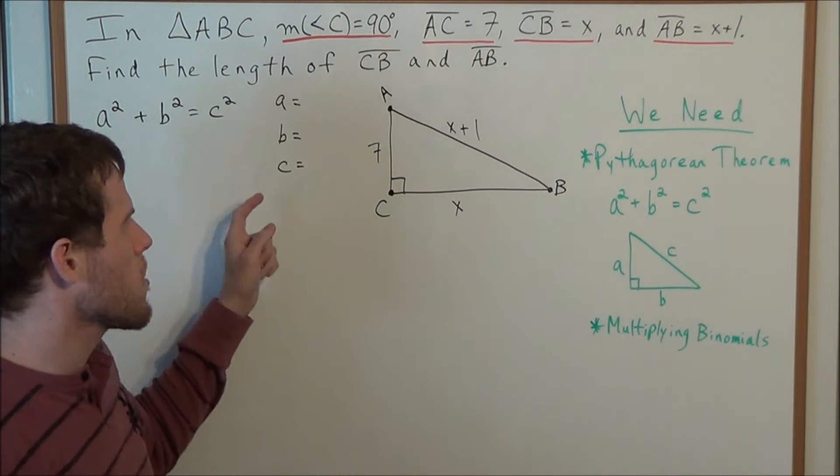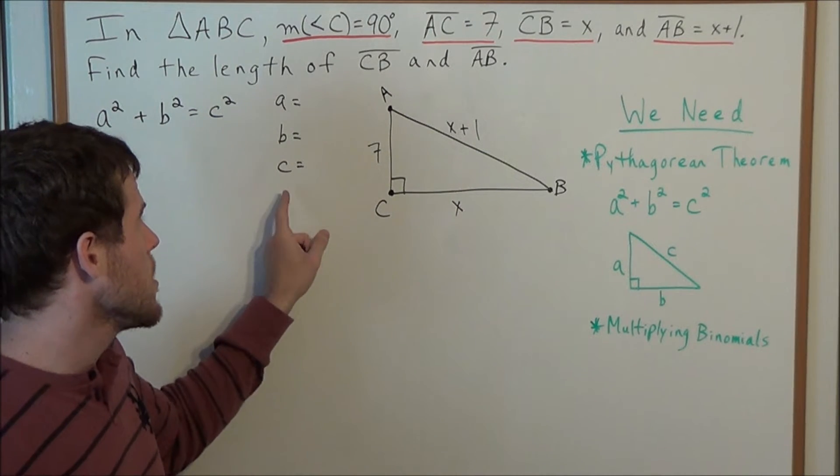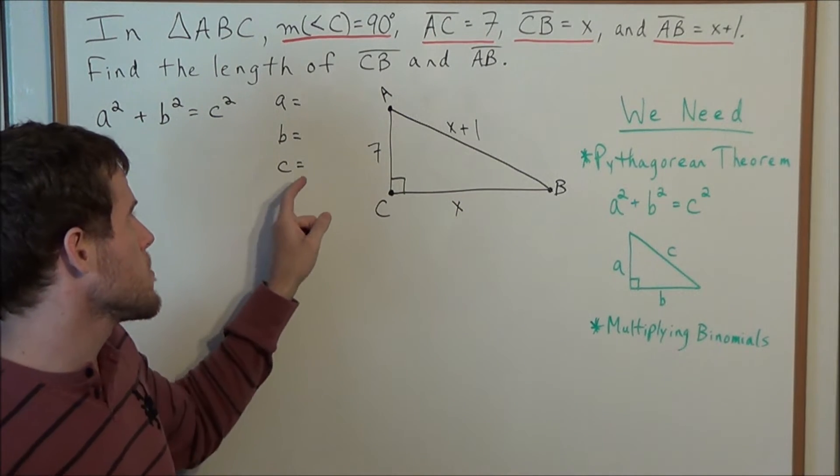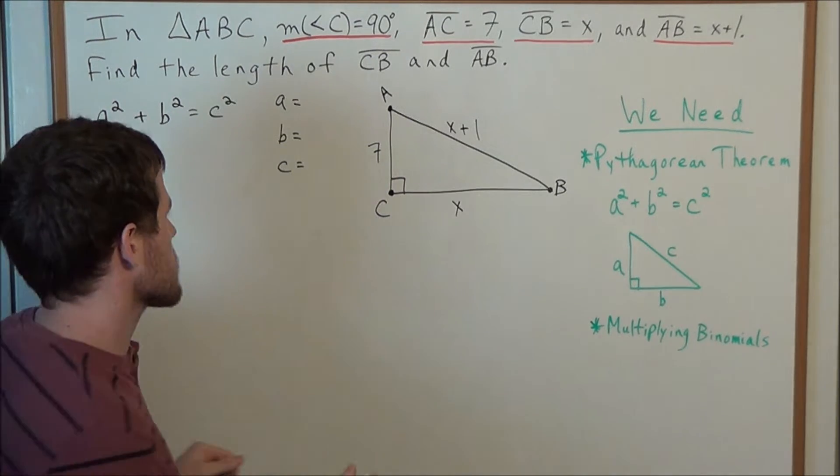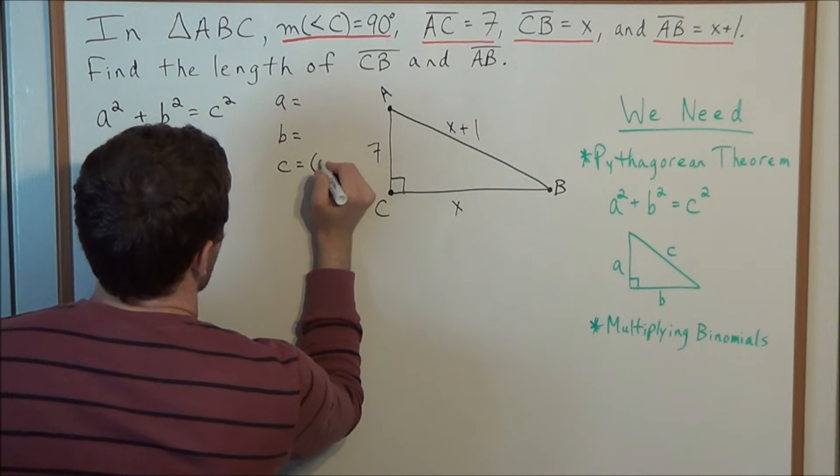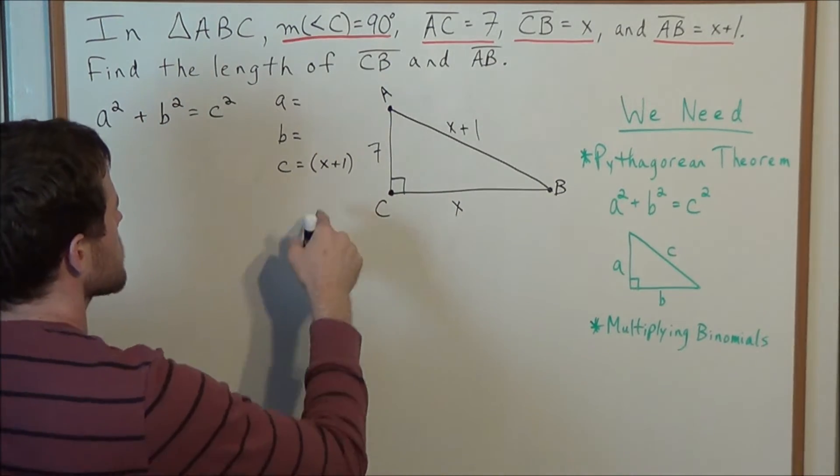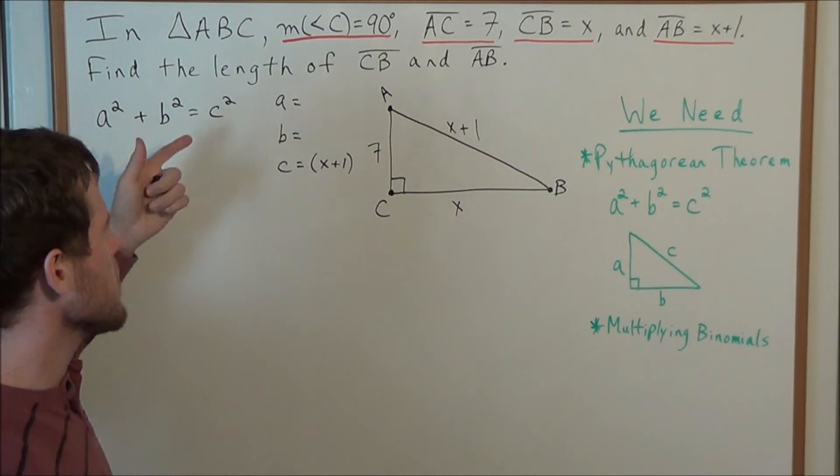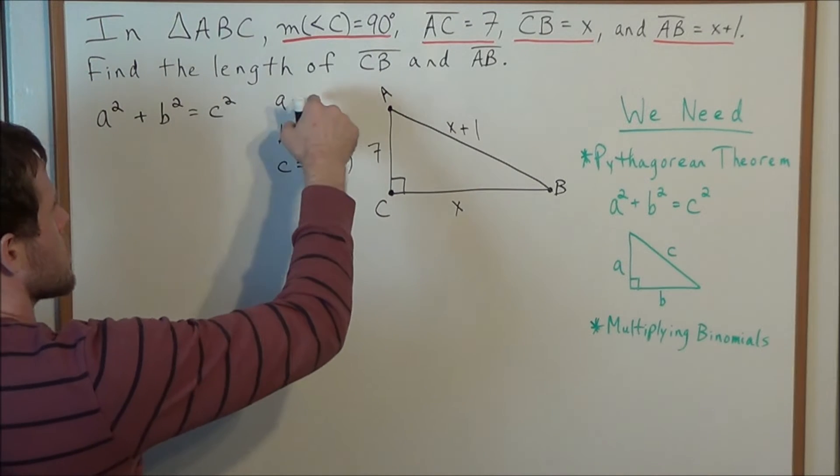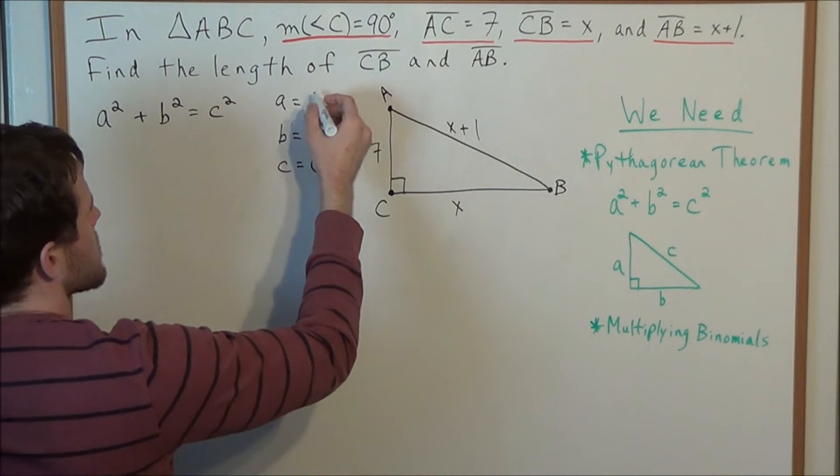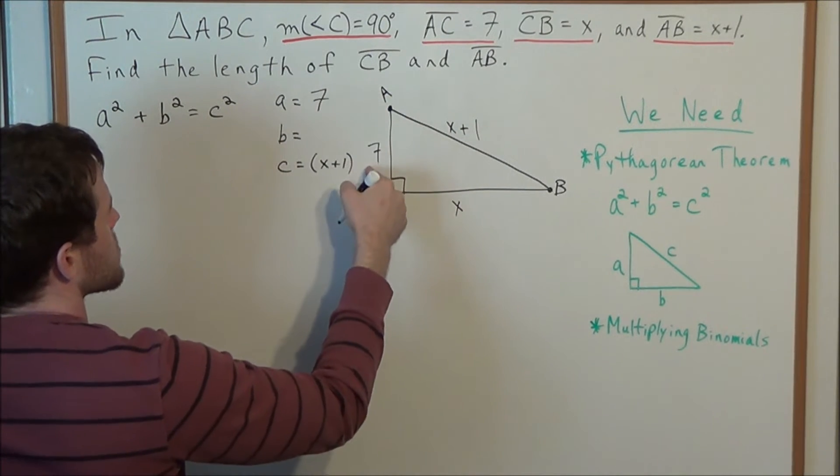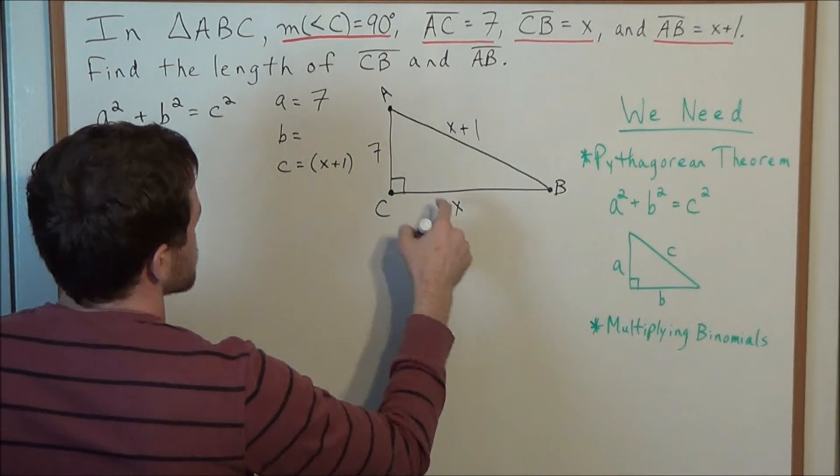Well the one we need to be careful with the most is the hypotenuse. So let's go ahead and set the hypotenuse C equal to X plus 1. Remember the hypotenuse is always opposite the right angle. So in this case we have C equals X plus 1. And now A and B are interchangeable, so we could call, let's say, side length A we'll say is 7. And we'll say the other length B is equal to X.